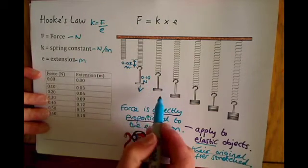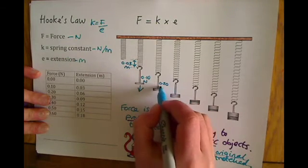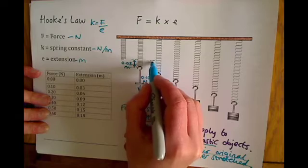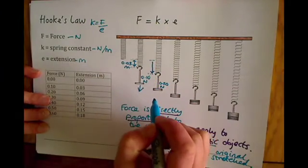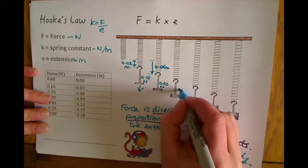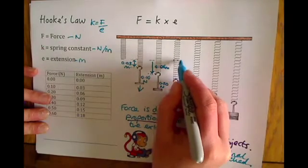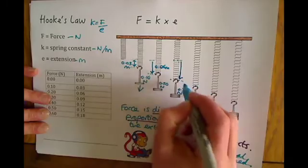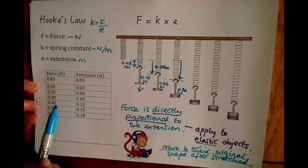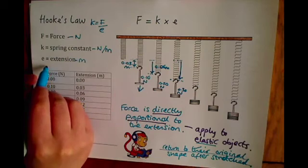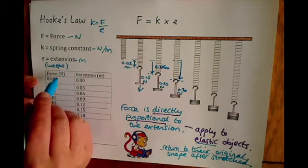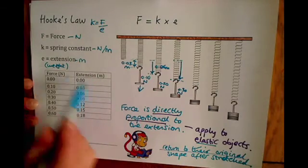We'd add more mass — perhaps this one is 0.20 Newtons — and we'd measure the extension from where the spring originally began. That might be 0.06 metres, and so on. We'd add more force and each time measure the extension of the spring. You might draw this in a table with force on the spring — which is the weight downwards, equivalent to mass times gravity — and then the extension that occurs on that spring.